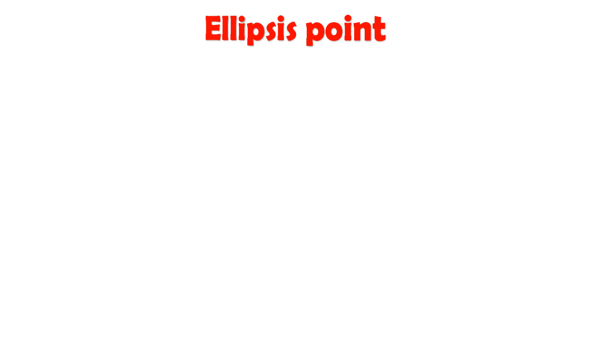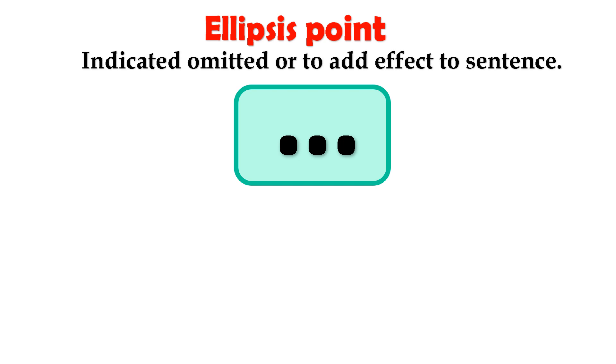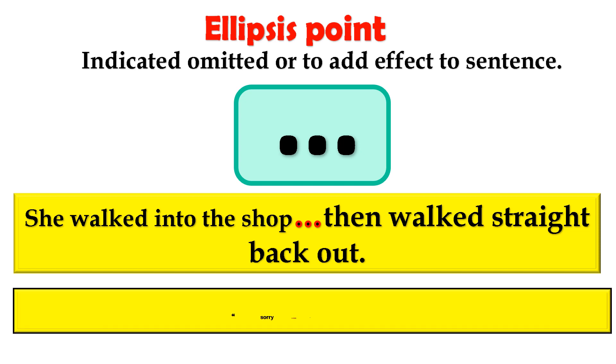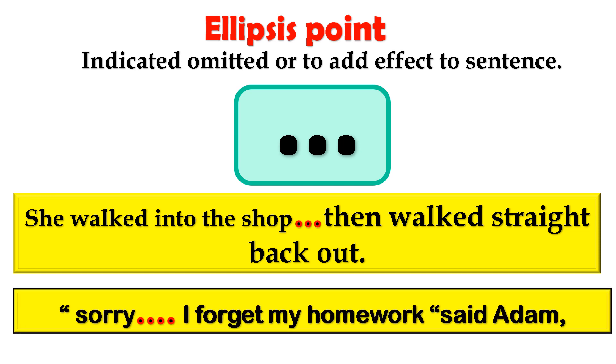Ellipsis points. Ellipsis points indicates omitted words or are used to add effect to a sentence. For example, she walked into the shop...then walked straight back out. This is an example of where words have been omitted. Omitted means when words have been taken out of the sentence. "Sorry...I forgot my homework," said Adam. This sentence shows us where ellipsis points have been used to create a pause for effect.